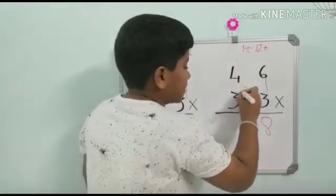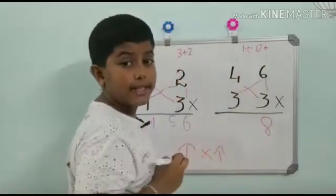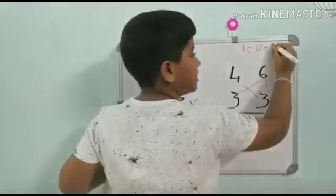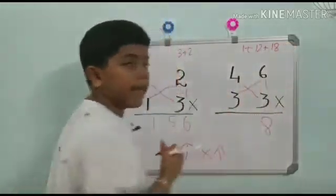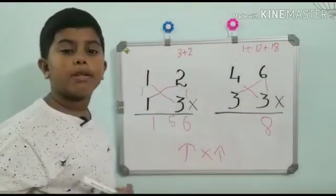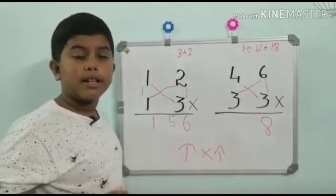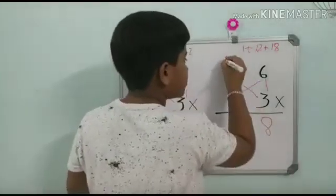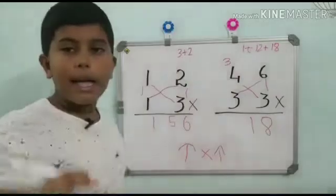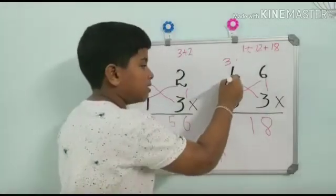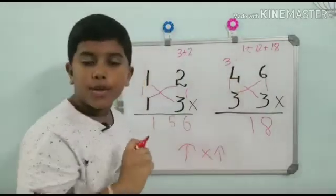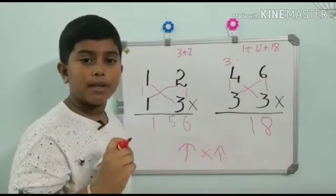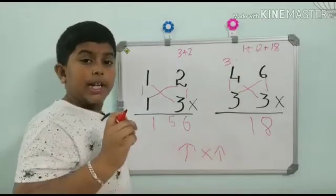18 plus 12 plus 1 is equal to 31. 1 here and 3 carry over. And now upwards, that is 4 into 3, 12. 12 plus 3, 15. Here's the answer.